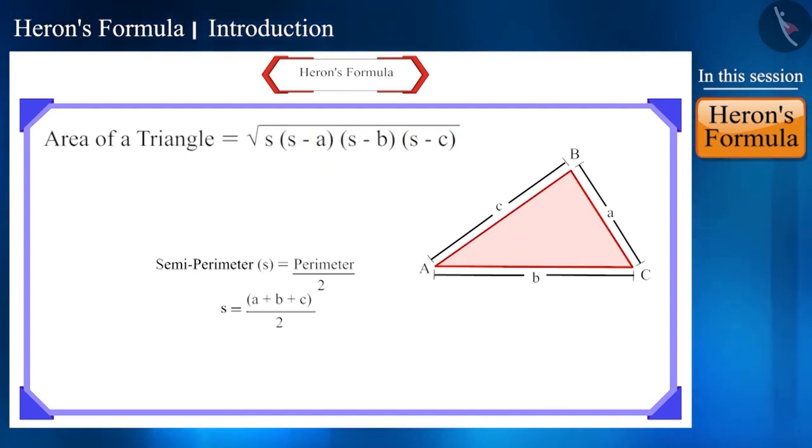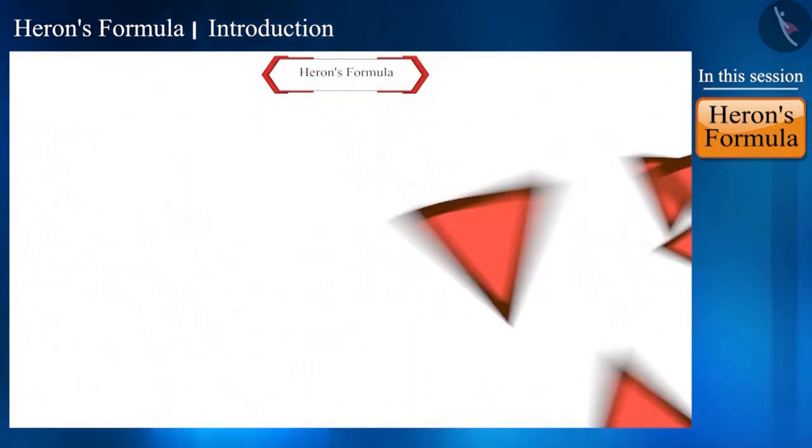That is, to find the area of a triangle, we just need to have information about the length of the sides of the triangle. To understand this better, let's look at this question.